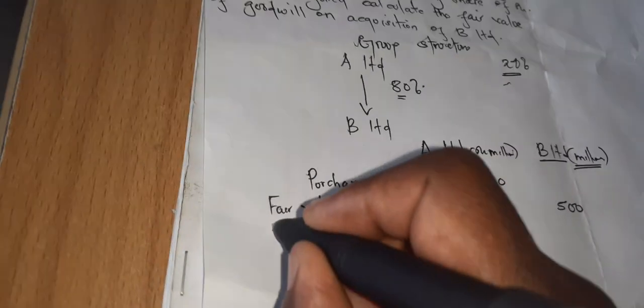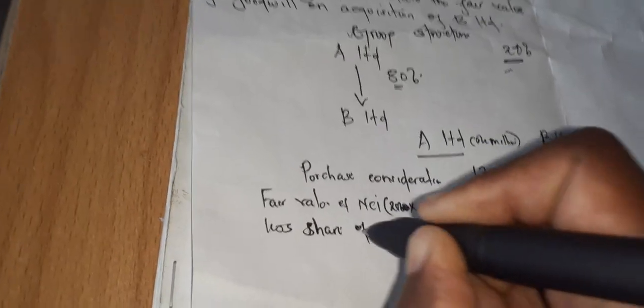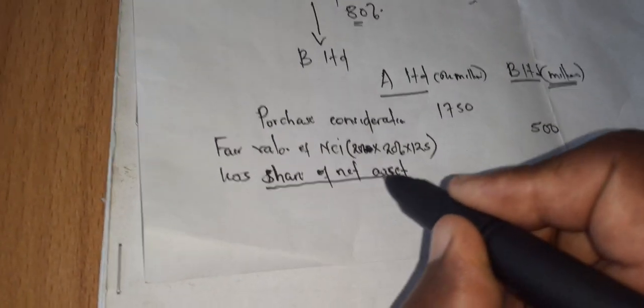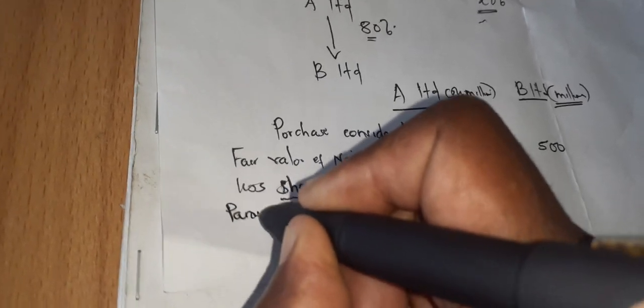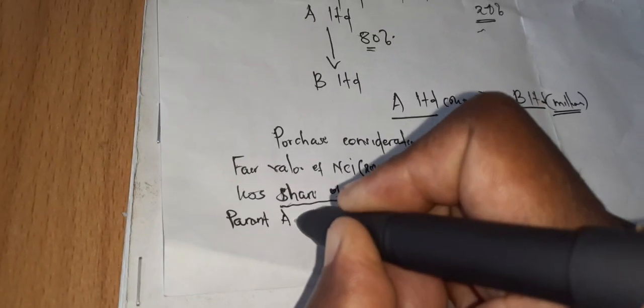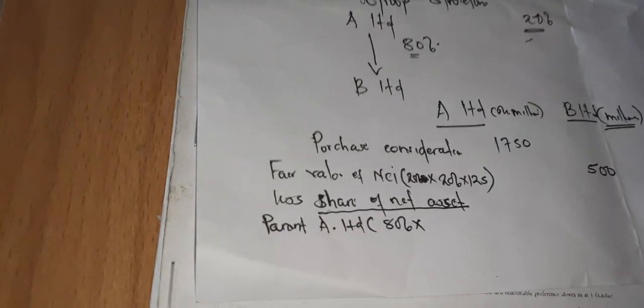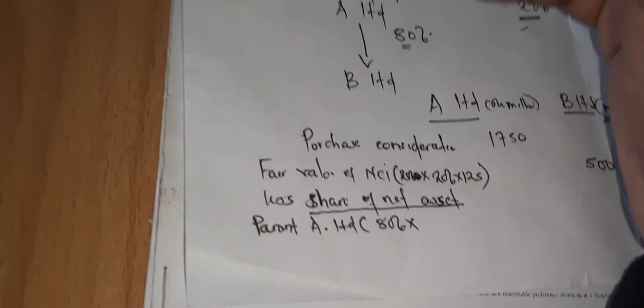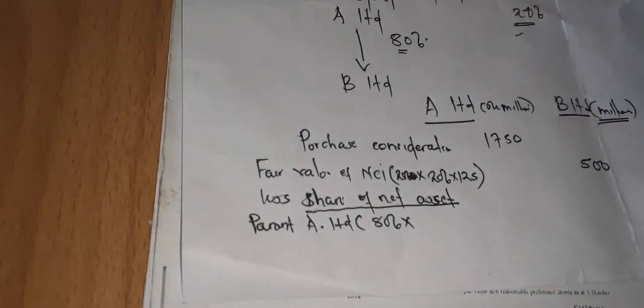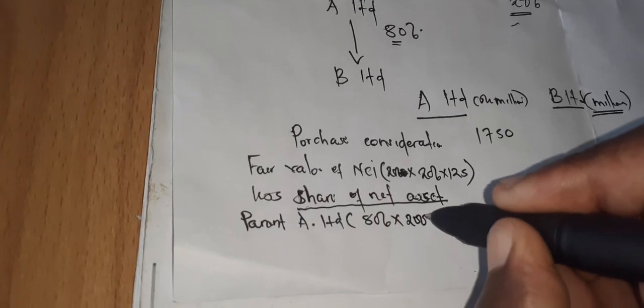And then we less the share of net asset. Less share of net asset. Our share of net asset. We have a parent company, it is A Limited on 80% of it. On 80% of these 200 million of B Limited.